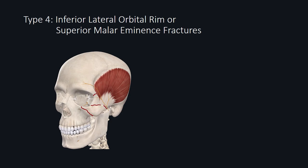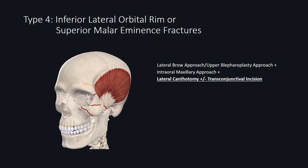Type 4 has a fracture along the inferior aspect of the lateral orbital rim or superior aspect of the malar eminence. This is significant because this area is at the inferior limit of what's reachable through the lateral brow incision and the superior limit of what's reachable through the intraoral maxillary vestibular approach. You need an additional approach consisting of lateral canthotomy with or without transconjunctival incision to mobilize the lower eyelid and gain adequate access. For hardware replacement, plate the ZF and ZM sections as normally, then use the additional approach to plate across the inferior aspect of the lateral orbital rim. If there is excess movement of the malar eminence, add a plate across the infraorbital rim to further stabilize it.